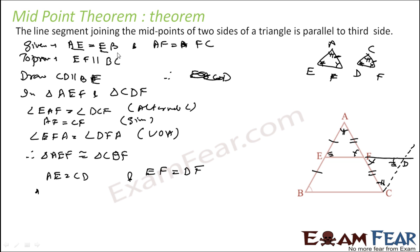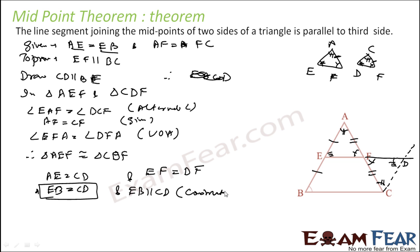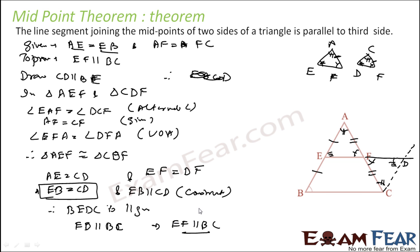Since AE equals EB (given), we substitute: EB equals CD. Now EB is parallel to CD by construction. Therefore BEDC is a parallelogram. Since BEDC is a parallelogram, ED must be parallel to BC — and since F lies on ED, EF is parallel to BC. That is what we had to prove.